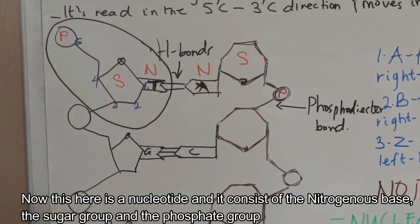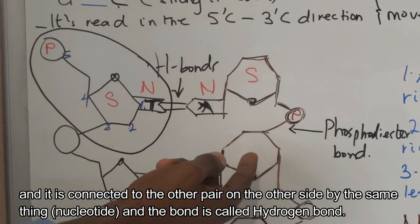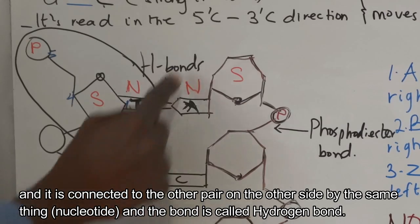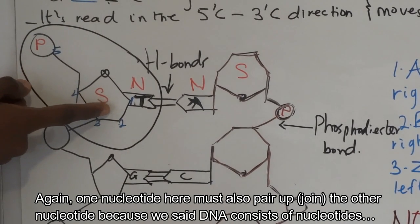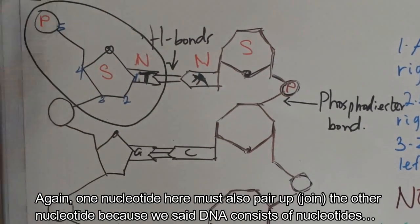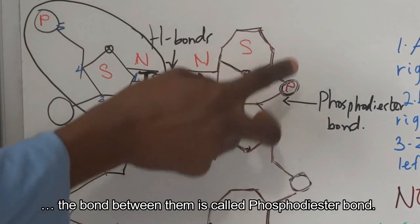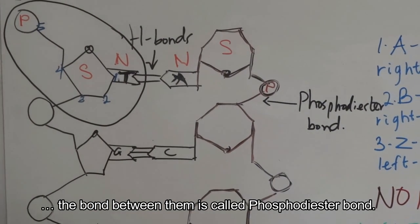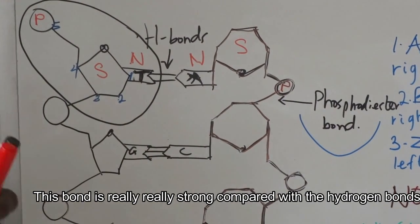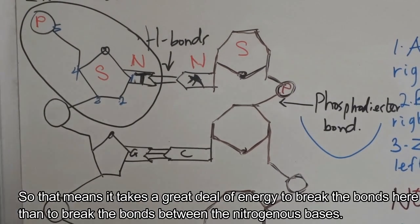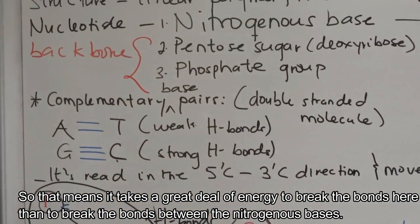A nucleotide consists of the nitrogenous base, the sugar group, and the phosphate group. It is connected to the other nucleotide by a phosphodiester bond. This bond is really, really strong compared to the hydrogen bond, so it takes a great deal of energy to break the bonds here than to break the bonds between the nitrogenous bases.